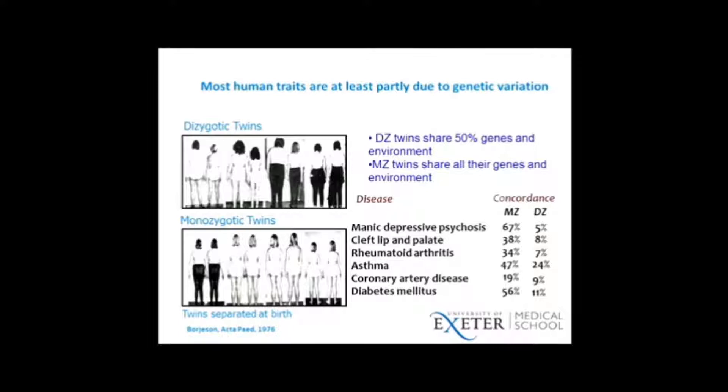How do we know about this mixture? How do we calculate what percentage is down to genetics? Well, probably the most powerful way to do that is using twin studies. And if you compare identical twins and non-identical twins with respect to different traits and conditions, you can get an estimate of the heritability or the genetic component for those traits or conditions.